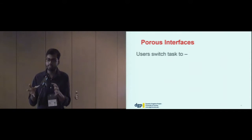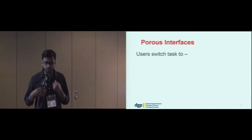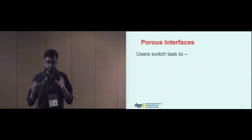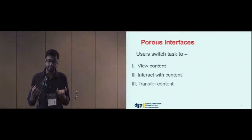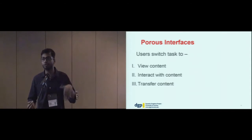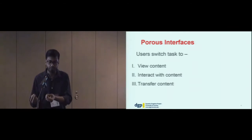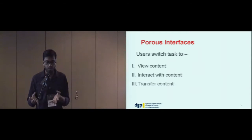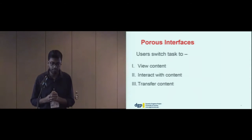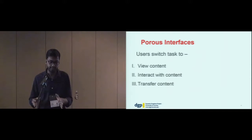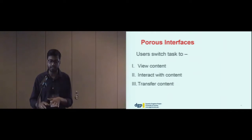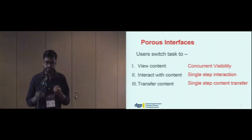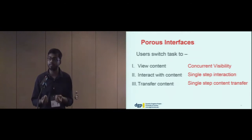Our aim is to reduce the switching time and effort and free the user to work on tasks rather than switching between tasks. We broadly classify three kinds of operations the user performs when they switch apps: first, to just view the content in the second app; second, to not just view the content but also interact with it; and third, to transfer some content from the first app to the second app or vice versa. Porous interfaces reduce those 10 to 12 steps to zero or one steps — enabling concurrent visibility, single-step interaction, and single-step content transfer.